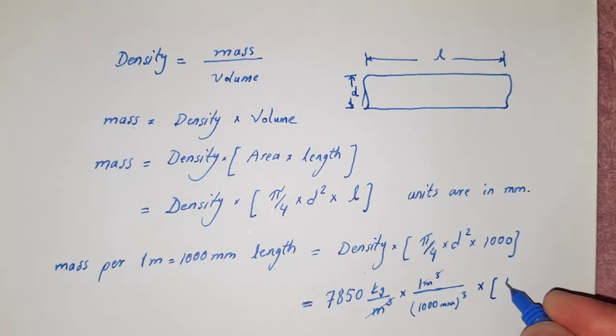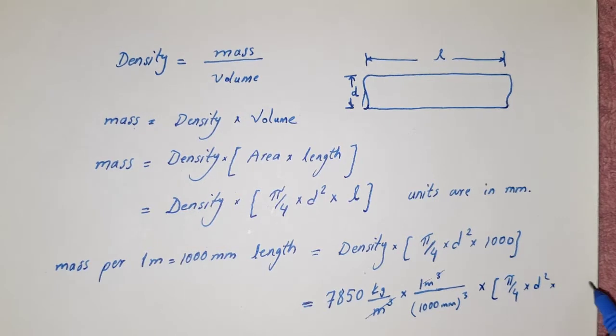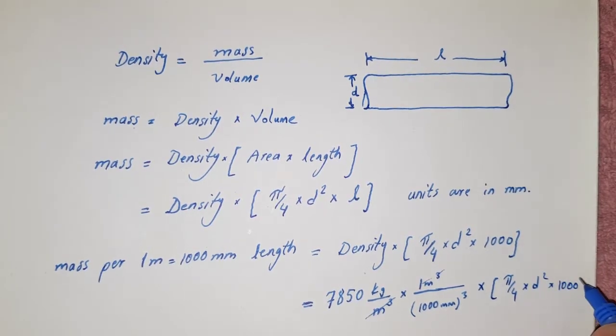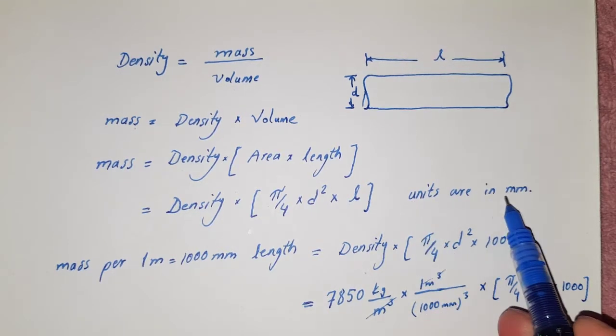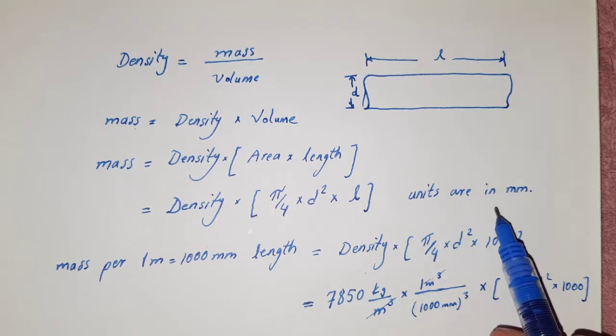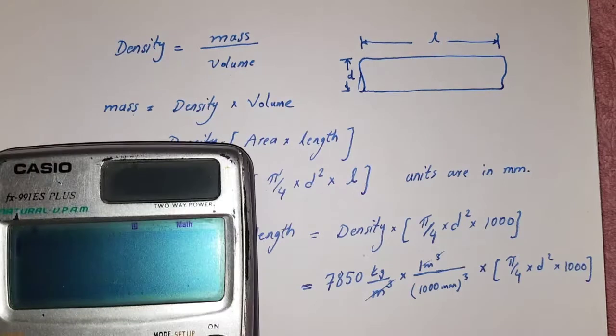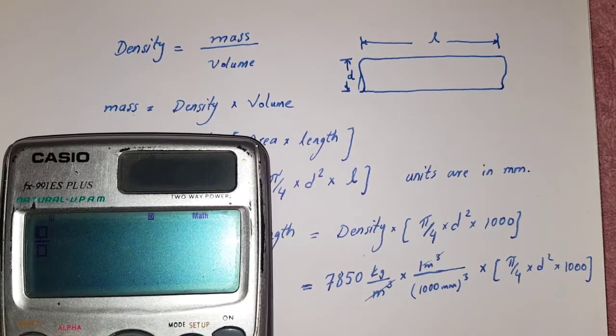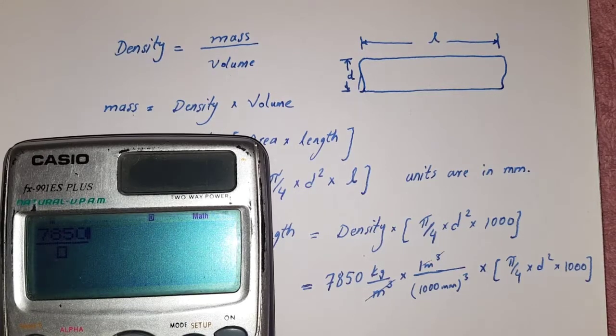Pi by 4 into d square into 1000 - all units are in millimeters. I mean that all units of length are in millimeters. Okay, now let's calculate this.